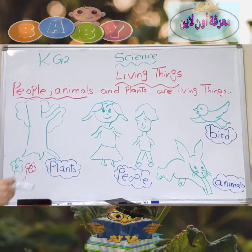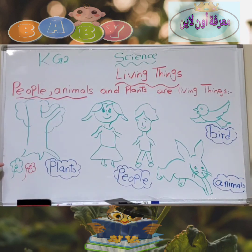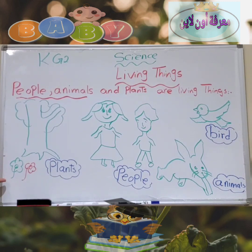What are other plants? Like grass, tree, and flowers are plants. All are living things.